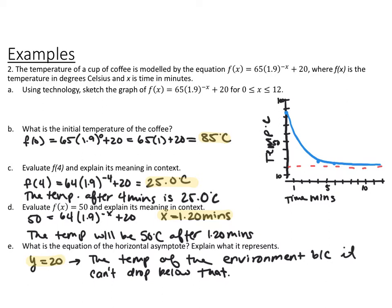For part D, evaluate when f of x equals 50: set the function equal to 50, enter y2 as 50 on the graphing calculator, find the intersection, and the result is x equals 1.20. So the temperature will be 50 degrees Celsius after 1.20 minutes. For part E, the horizontal asymptote: there's a plus 20 on the end, so the asymptote is y equals 20. The graph hugs that line but never touches or crosses it. In context, it means the coffee can never get colder than 20 degrees — most likely the temperature of the surrounding room.